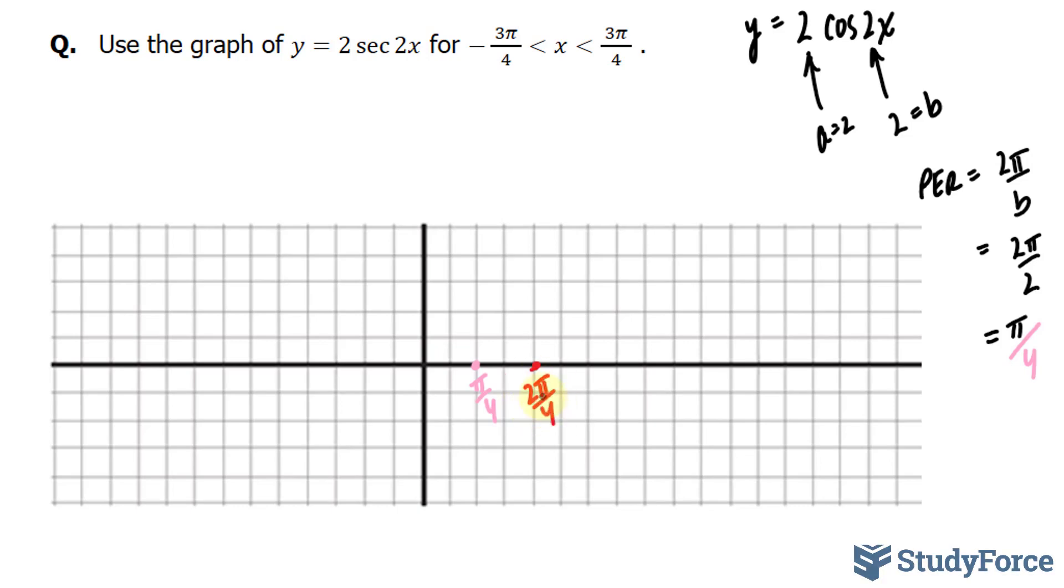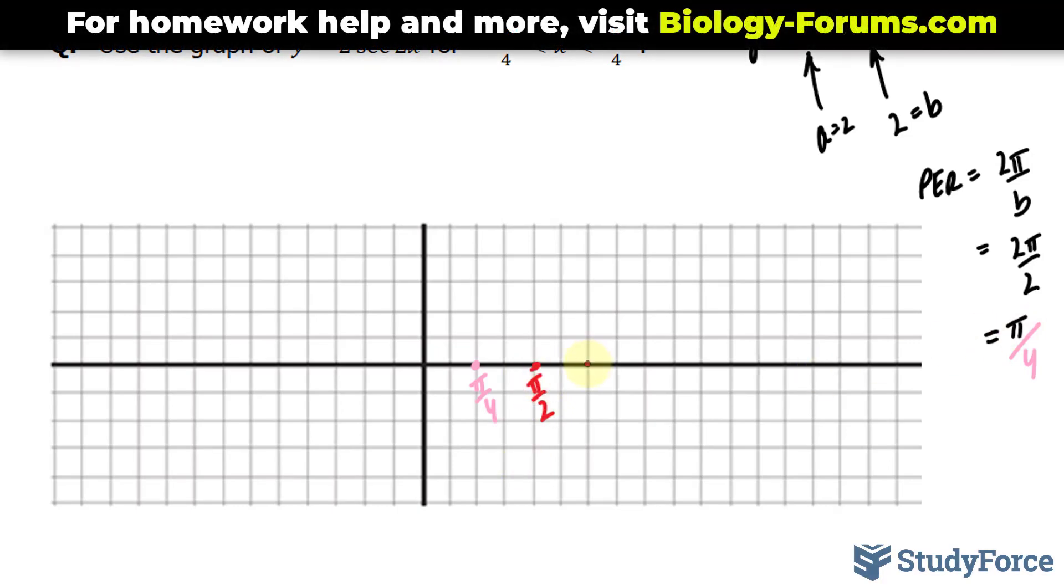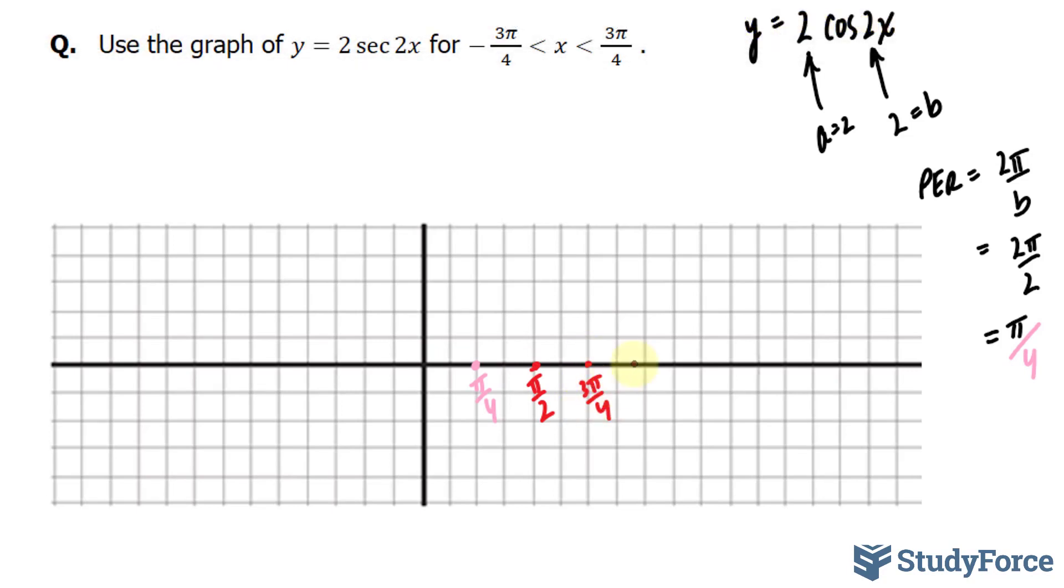And if we reduce that down, it becomes π over 2. If I add π over 4 to π over 2, I end up with 3π over 4, and another π over 4 added to this gives me my period of π.